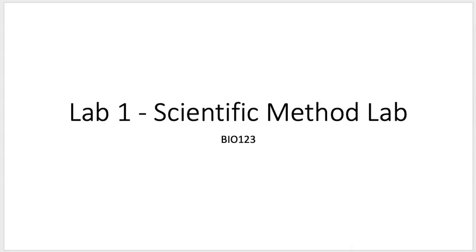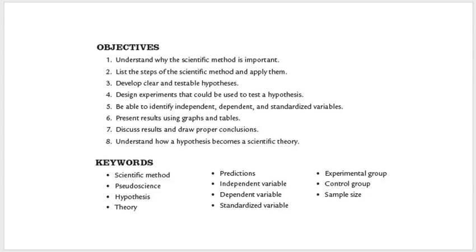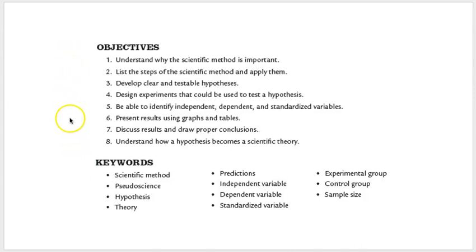In this first lab, students are going to learn about the scientific method. Before we look at what the scientific method is and why it's important, I want to point out that before every lab, there are a set of lab objectives that we want students to accomplish by the time they complete the lab, as well as a list of keywords that students will be held accountable for. Always make sure that you are reading through the lab objectives and familiarizing yourself with these keywords. You will find these keywords throughout the lab — they will be the bolded terms that students are accountable for in regards to definition and being able to use them in context.